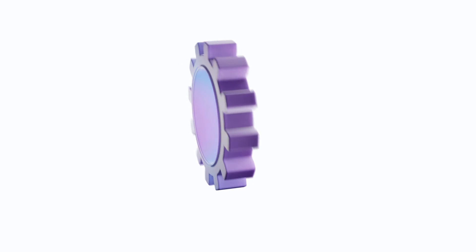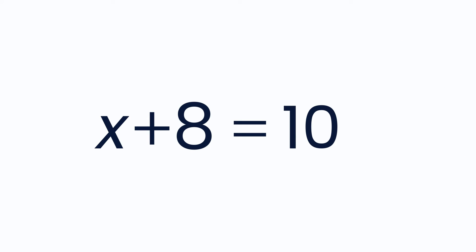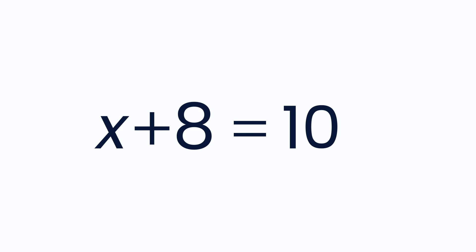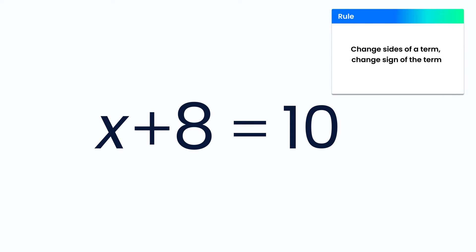Solve the equation x plus 8 equals 10. In this case, x and 8 are on the same side of the equal sign, and you want to isolate the x in order to solve this equation. The Change Sides Change Sign Rule allows you to move a term to the other side of the equation if you also change its sign in the process.